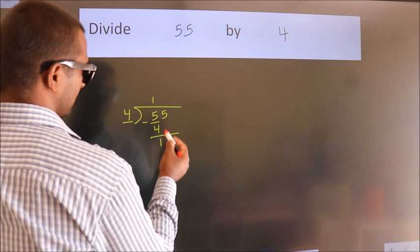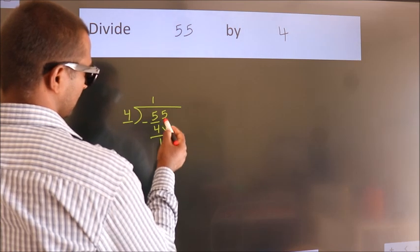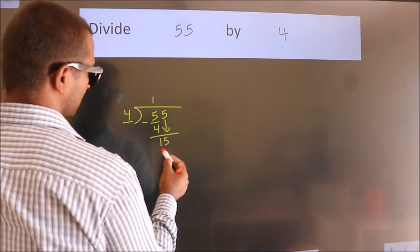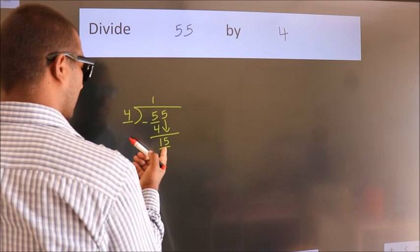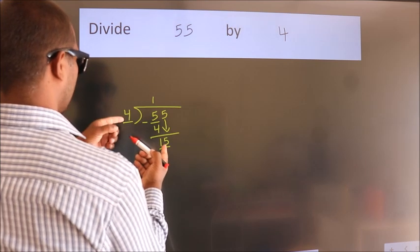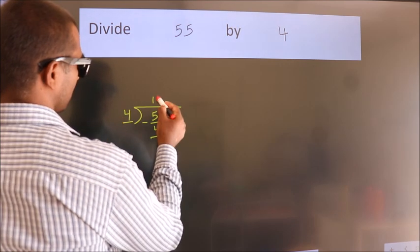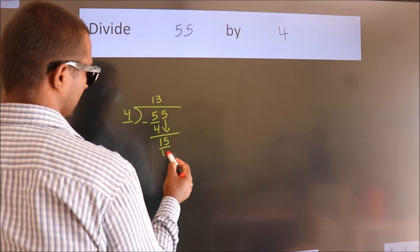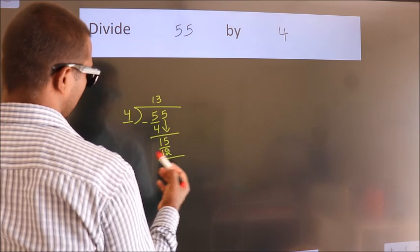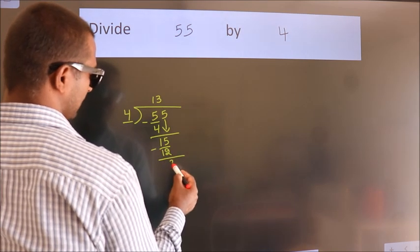After this, bring down the beside number. So 5 down. So 15. A number close to 15 in 4 table is 4 3s 12. Now we subtract. We get 3.